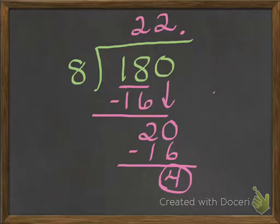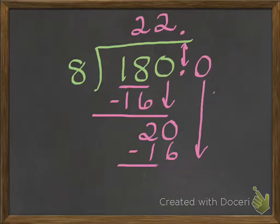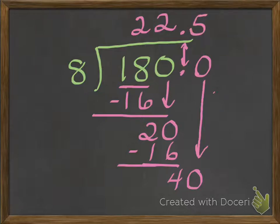I'm going to put a decimal point, and I can put one in the dividend too, because they go right above each other. And now I know that behind that decimal point, there really is a zero — there's always a zero there. Now I have a zero to bring down. Instead of just four, I have 40. So I had 20 minus 16 is four — I'm going to bring down the next zero, and now I have 40. 40 divided by 8 is 5. 5 times 8 is 40. I subtract, and now I've gotten to zero.